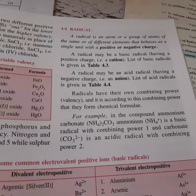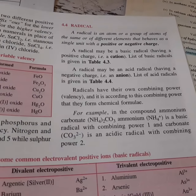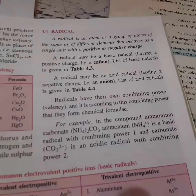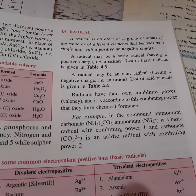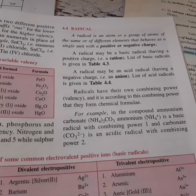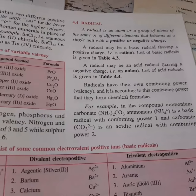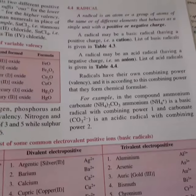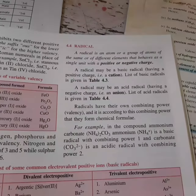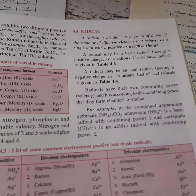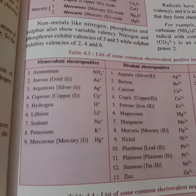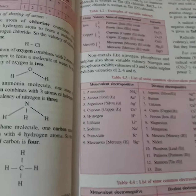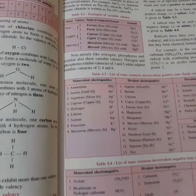Radicals may be basic radicals if they carry a positive charge — we call them cations. Similarly, radicals may be acidic radicals if they carry a negative charge — we call them anions. On that basis, your book has a full list showing these two types of radicals.